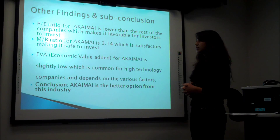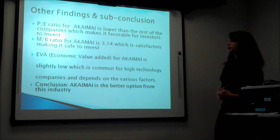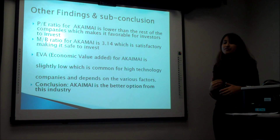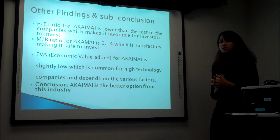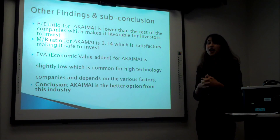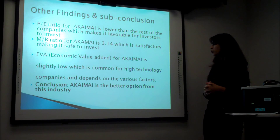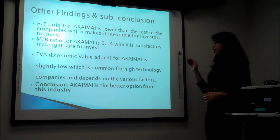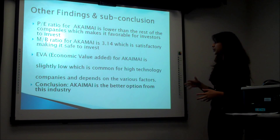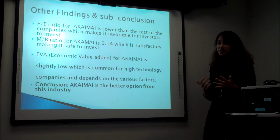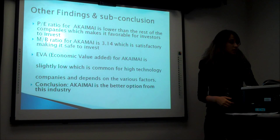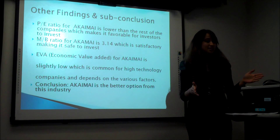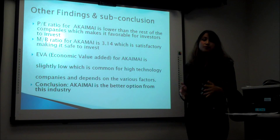The other ratios to be considered: the PE ratio for Akamai is lower than the rest of the companies, which makes it favorable for investors to invest. Similarly, the market-to-book ratio for Akamai is 3.14, which is satisfactory, making it safe to invest. Economic value added for Akamai is slightly low, which is common for high-tech companies as it depends on various factors. Under this industry, Akamai is the better option to invest.